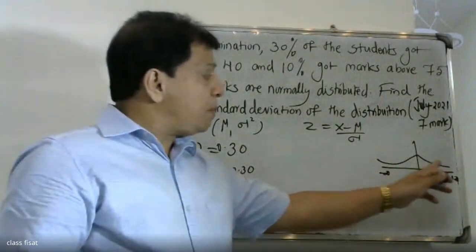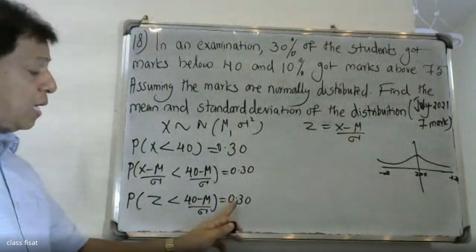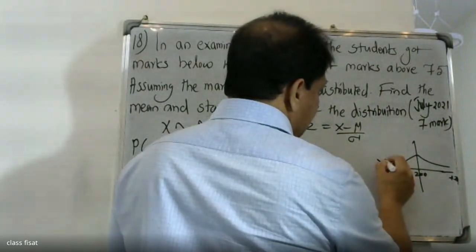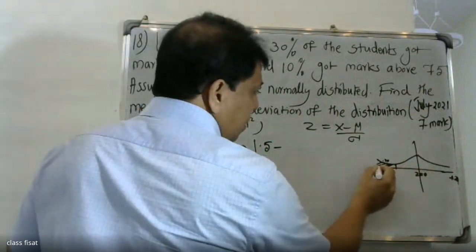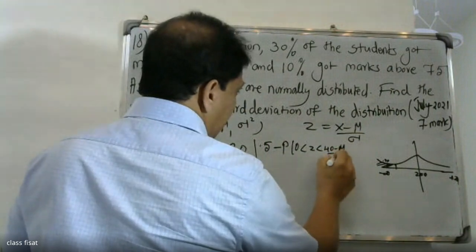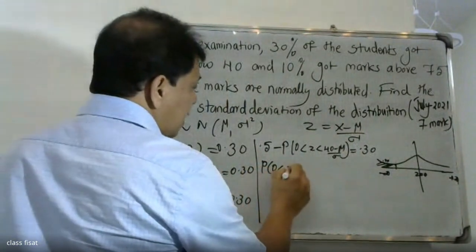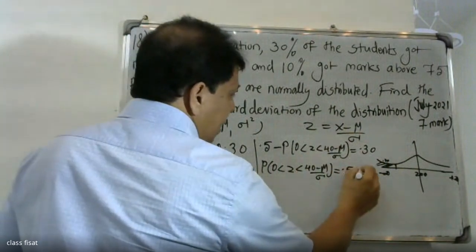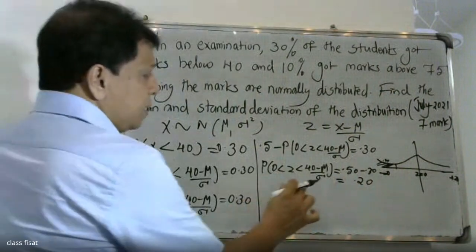From the diagram, 0.30 is on the left side. So the probability of 0 less than Z less than 40 minus mu by sigma is equal to 0.5 minus 0.30, which equals 0.20.